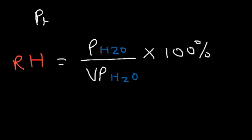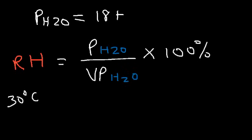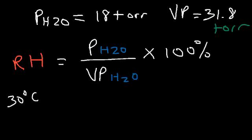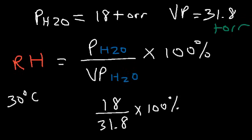Let's say the partial pressure of water at a temperature of 30 degrees Celsius is about 18 torr, and the vapor pressure of water at that temperature is 31.8 torr. To calculate the relative humidity, all you need to do is divide the two numbers and multiply by 100%. So 18 divided by 31.8, times 100, gives us 56.6%. That's the relative humidity based on these particular values.